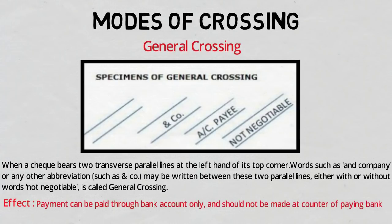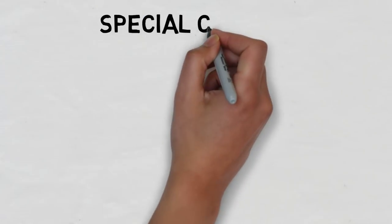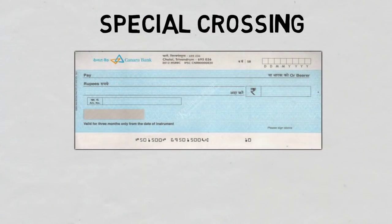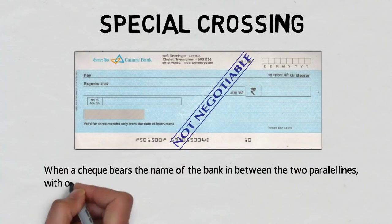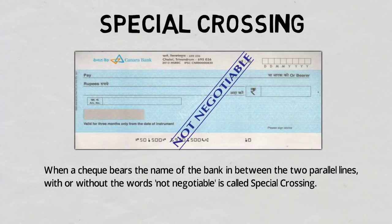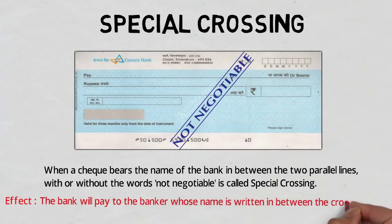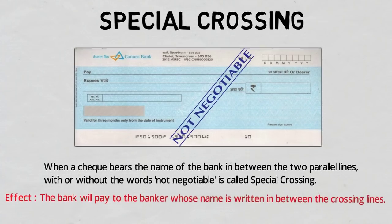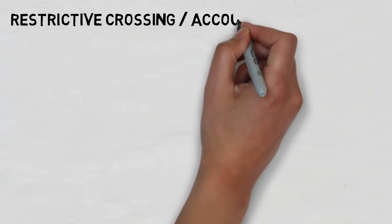Special crossing is when a check bears the name of a bank in between the two parallel lines, with or without the words 'not negotiable.' In special crossing, the bank will pay to the banker whose name is written in between the crossing lines.